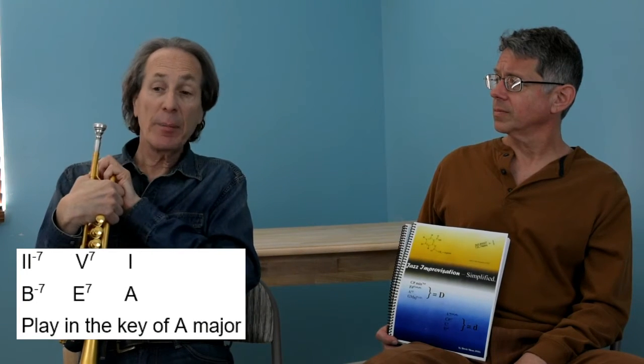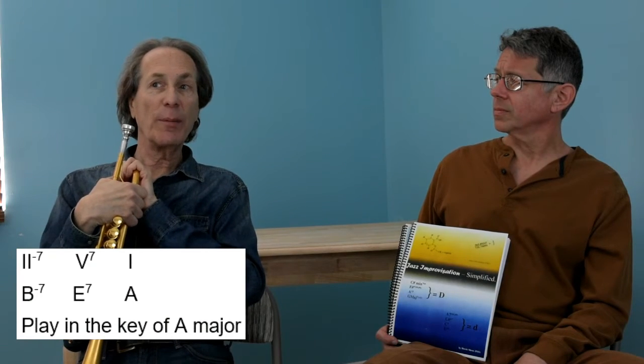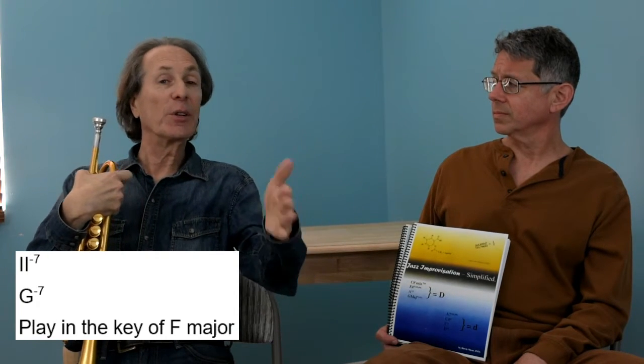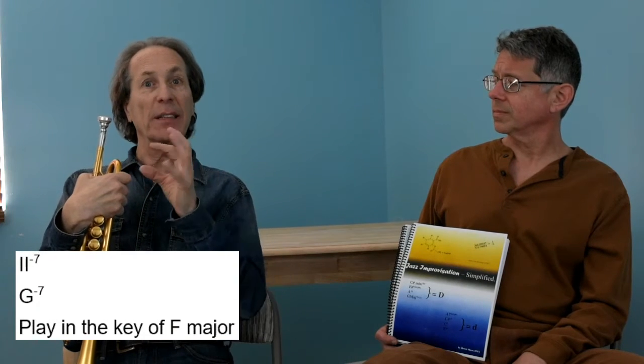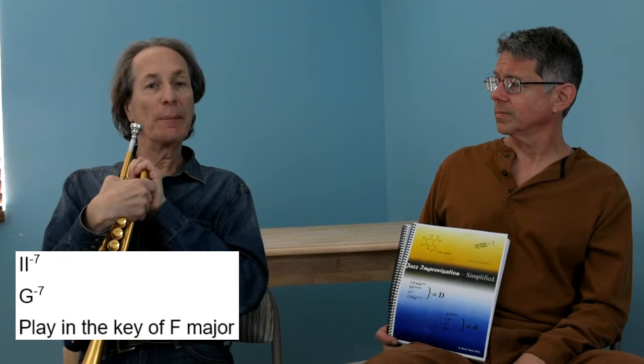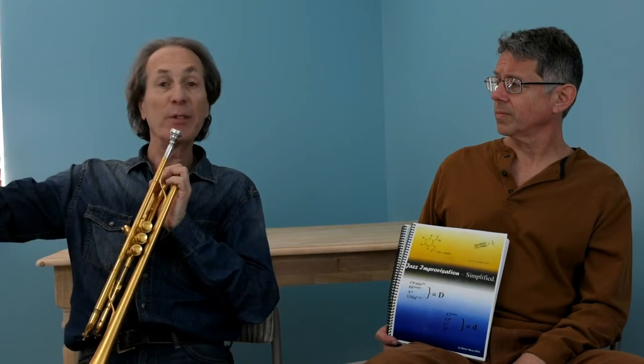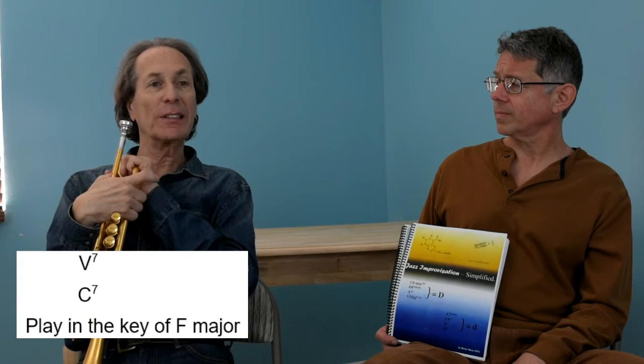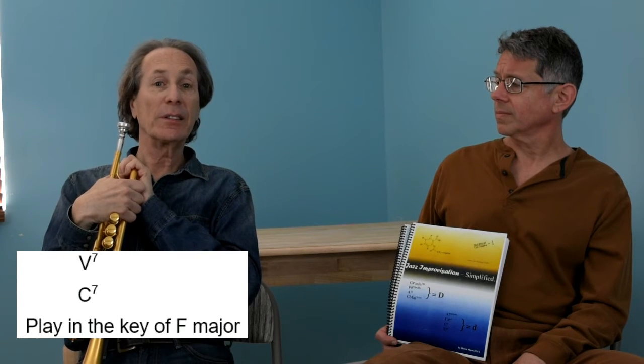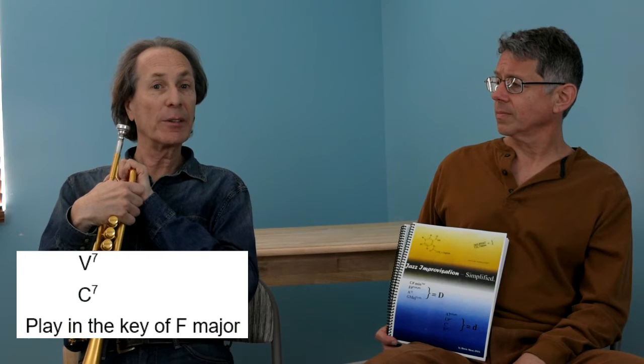The same thing applies to all keys. Going back to the key of F — G minor seven is a minor chord, always going to be a two chord of a major key. You go back one step and find that G is the two of F major. So when I see G minor seven, I'm improvising in F major. Likewise, C seven is a dominant chord — the five chord of F — and counting back five steps lands on F major.